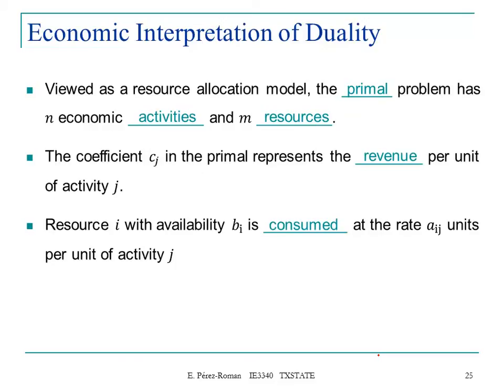Resource i, so this will be activity i, with availability bi, so this coefficient is bi, is consumed at a rate of aij. This is aij per unit of activity j. You want to set your schedule or your production for each unit in the best way possible, so you can use those 200 hours in the best way and maximize your problem. Resource i will have availability bi consumed at a rate of aij units per unit of activity j.